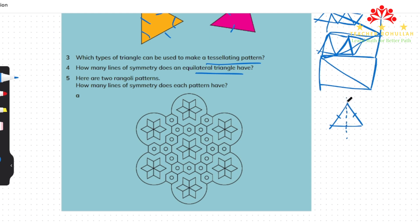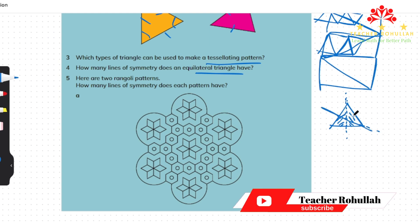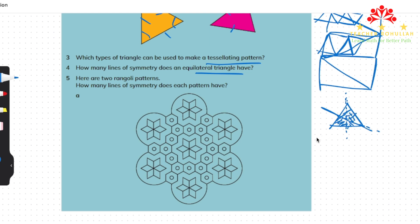An equilateral triangle can have three lines of symmetry. The first line cuts the triangle into two identical parts that are exactly the same. From another vertex, a second line of symmetry cuts the triangle into two identical parts. And from the third vertex, a line of symmetry also cuts the shape into two identical parts. So an equilateral triangle has three lines of symmetry.